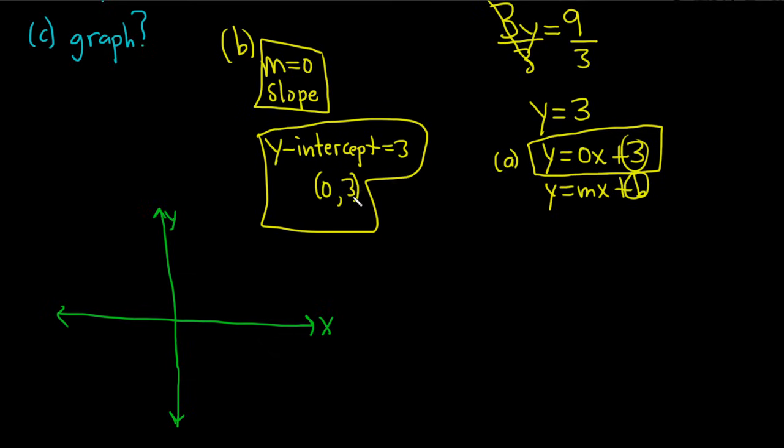So the y-intercept is 0, 3, so we would go right 0 and up 3 from the origin. So 1, 2, 3, and the slope is 0, so you rise nowhere, and then you can run as much as you want.